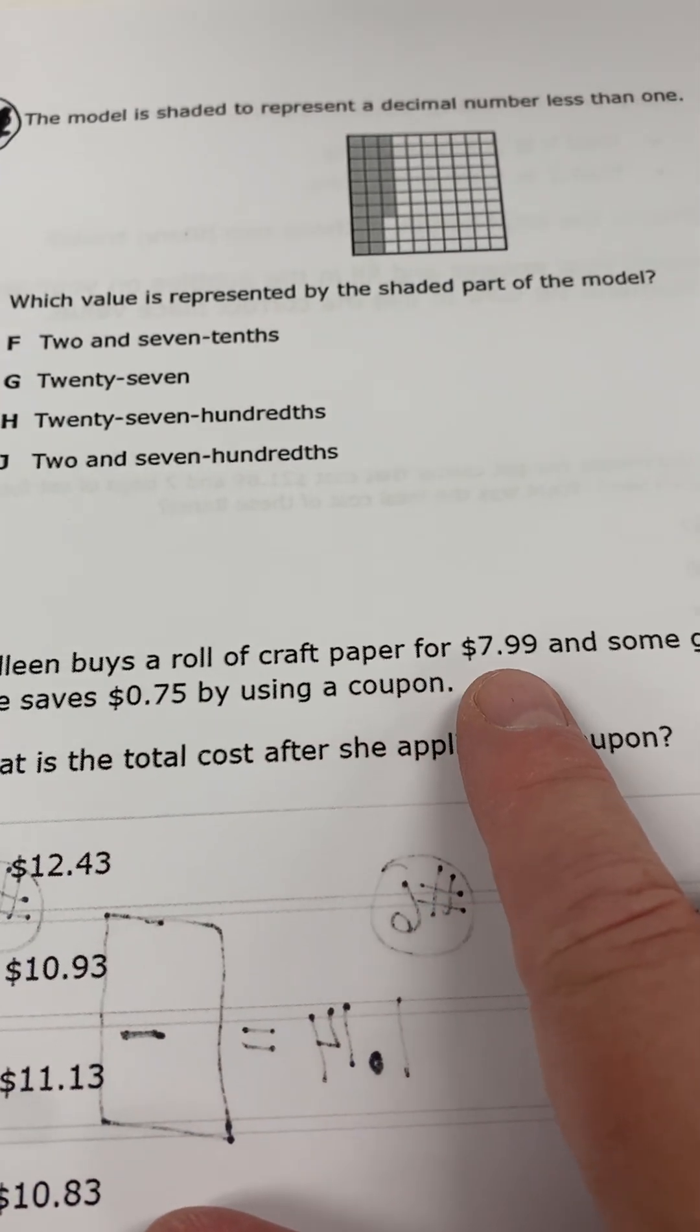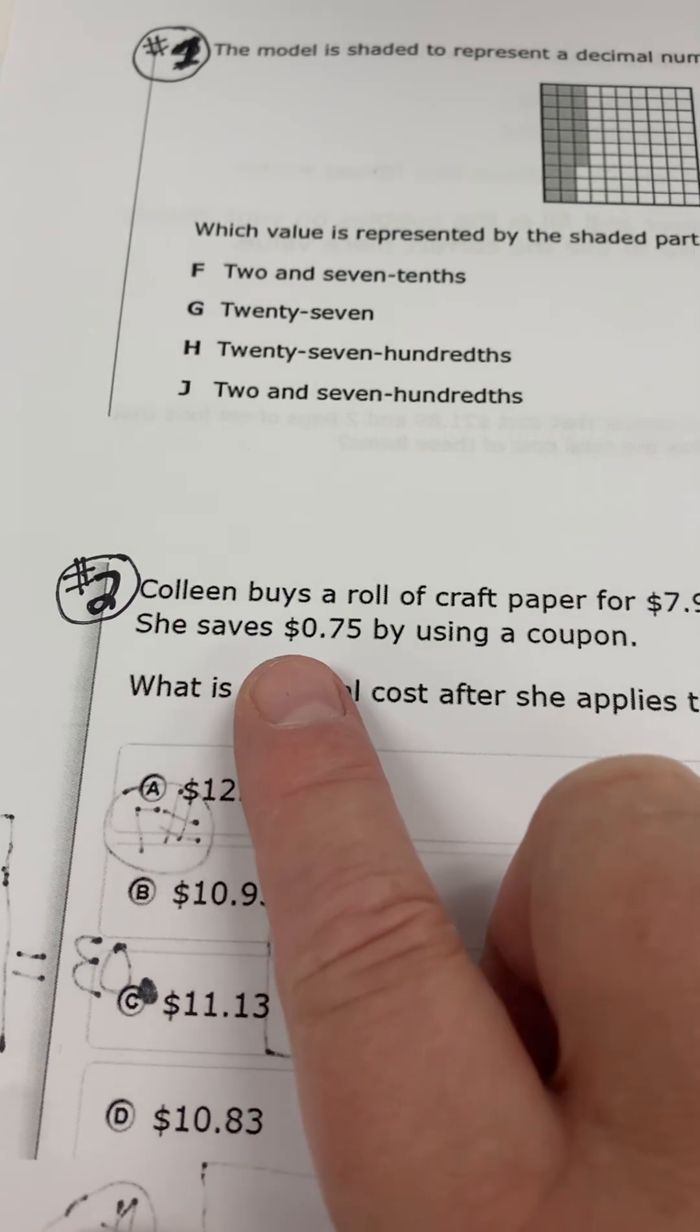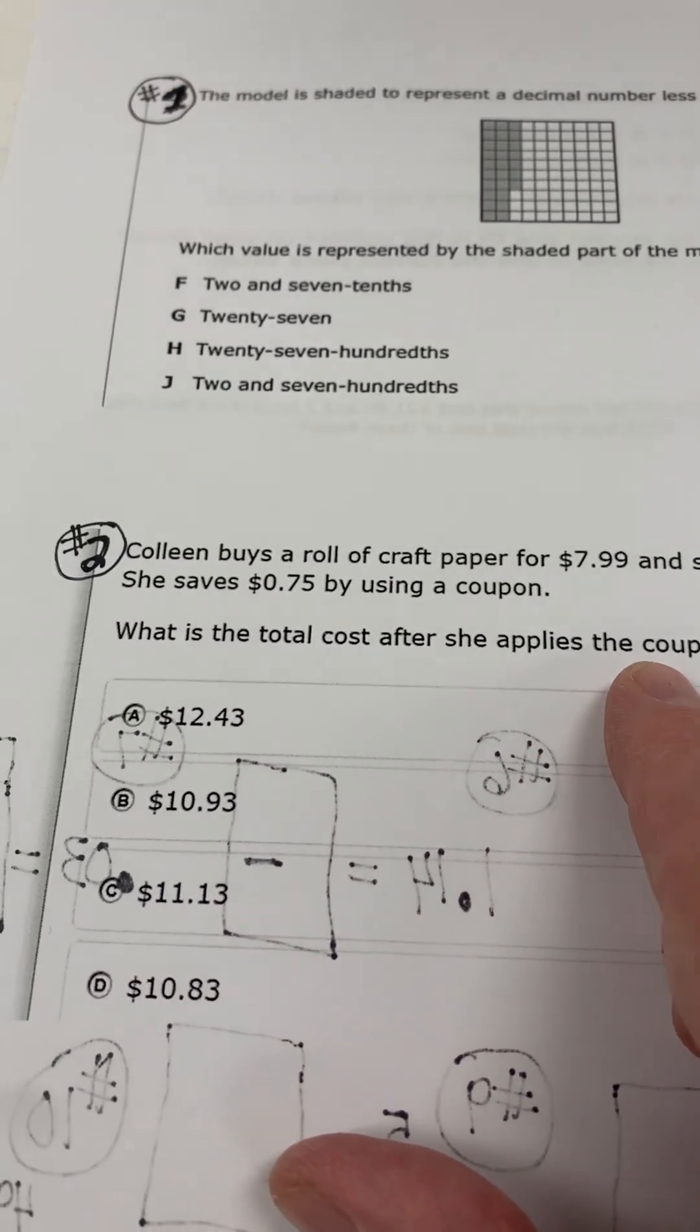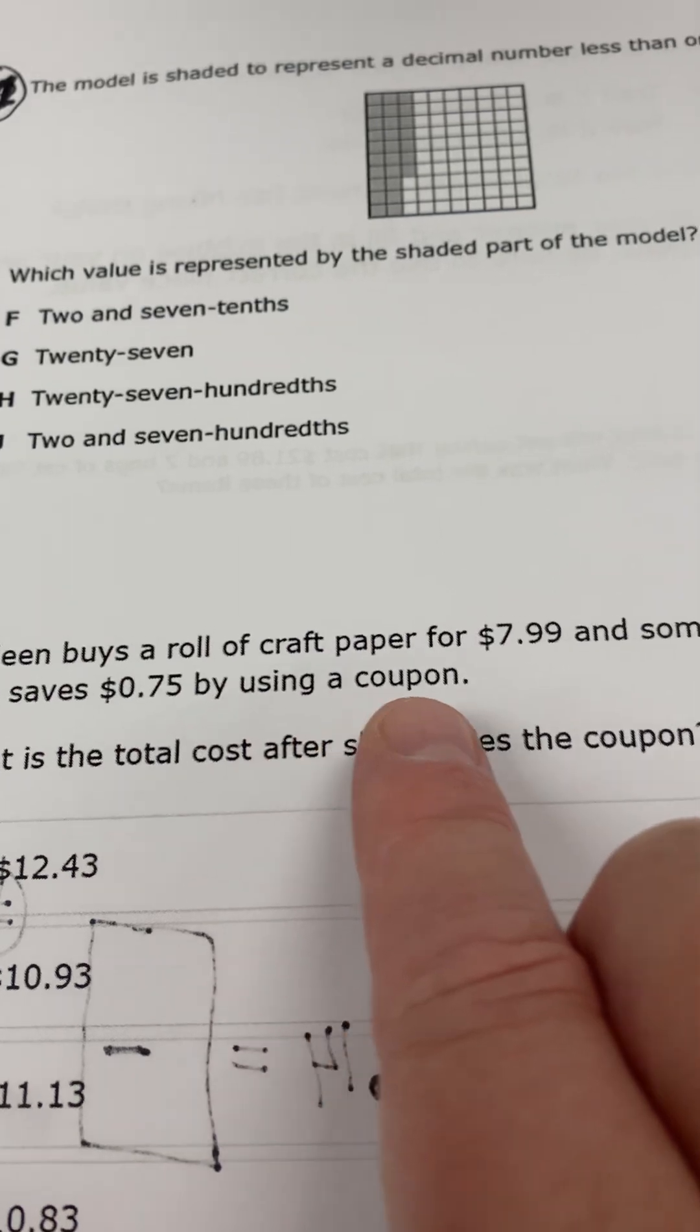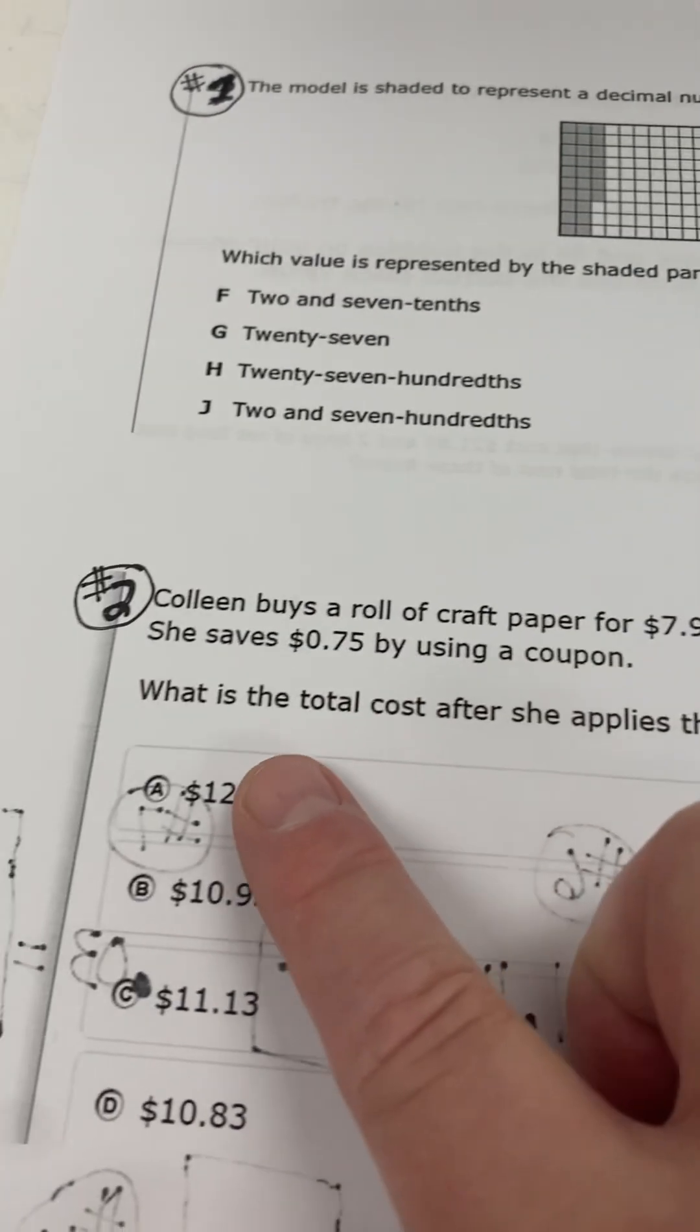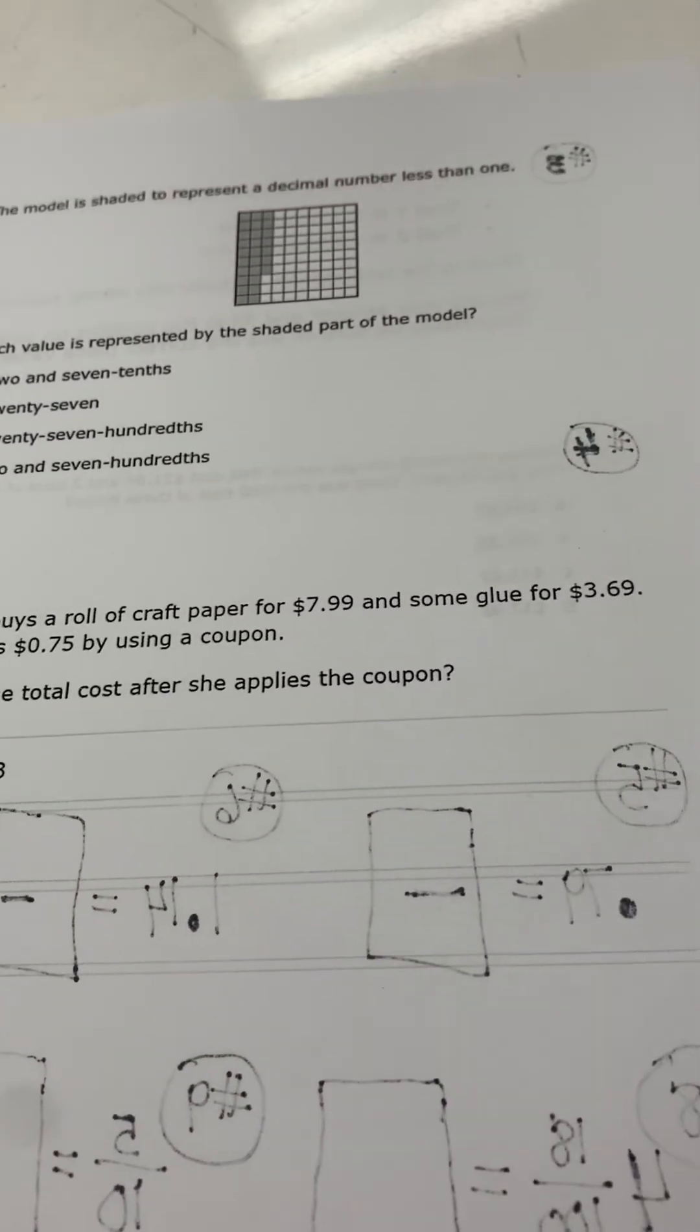Colleen buys a roll of craft paper for $7.99 and some glue for $3.69. She saves 75 cents by using a coupon. What is the total cost after she applies the coupon? Choose your best answer. Show all your work.